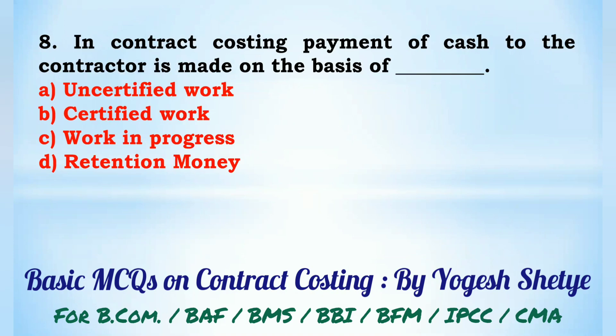Question 8: In contract costing, payment of cash to the contractor is made on the basis of — (A) uncertified work, (B) certified work, (C) work in progress, (D) retention money. Payment of cash to the contractor is made on the basis of certified work. Answer: B.